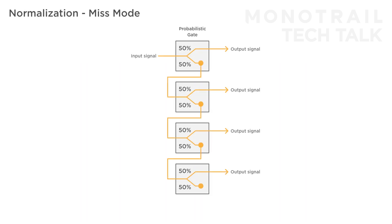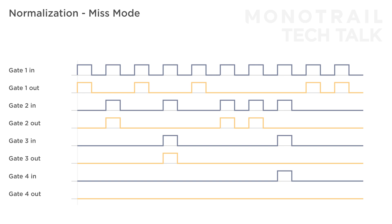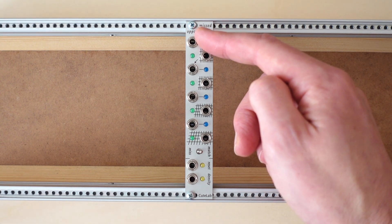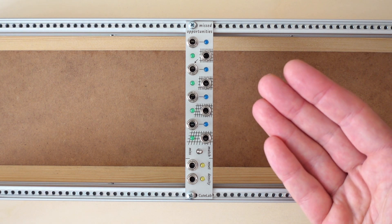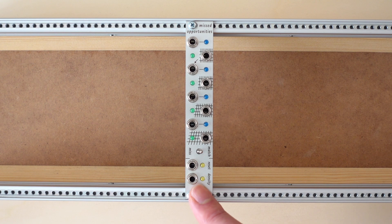In miss mode, signals that are blocked are passed on to the input of the next gate. So again, with a steady clock with a 50-50% chance, all the gates that are blocked by the first gate will be passed on to the input of the second gate. In turn, signals blocked by the second gate will pass on to the next gate, and so on. The first input, not being normaled to another gate, is unique. When nothing is patched into this input, it becomes a random pulse generator. The density CV here controls the amount of random pulses being generated.